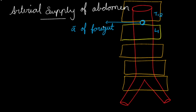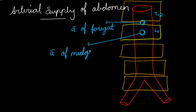If you have any doubt regarding the arterial supply of the celiac trunk, check out that video. Then comes the superior mesenteric artery, which arises at the L1 vertebral level and is also called the artery of the midgut, as it mainly supplies the organs derived from the midgut.